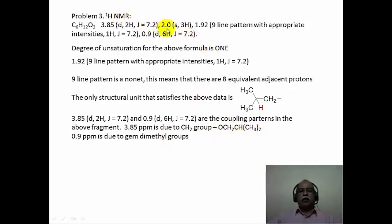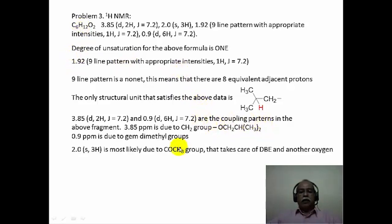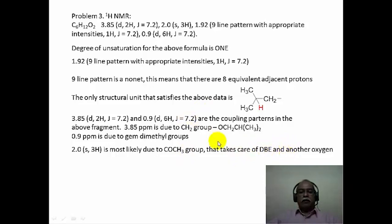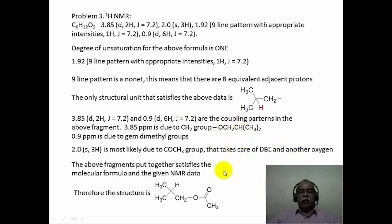There is one data still left out: 2.0 ppm of 3 hydrogen intensity. There is still one oxygen, two carbons, and 3 hydrogens left in the molecular formula. Subtracting this fragment from the molecular formula yields an acetyl group. A signal between 2.0 and 2.5 ppm as a singlet of 3 hydrogen intensity most often implies an acetyl group is present. Putting all these fragments together, the structure of the molecule is isobutyl acetate.